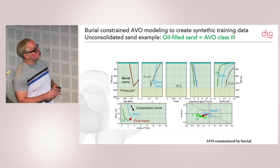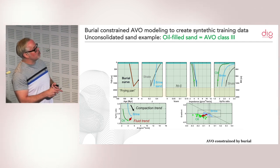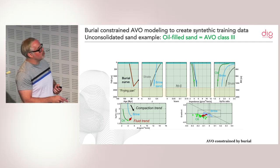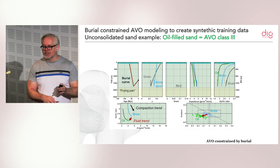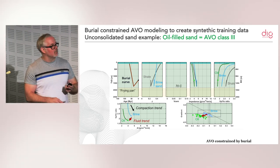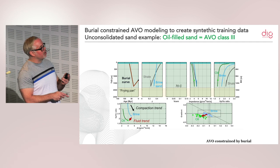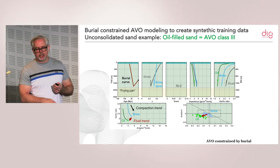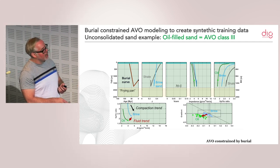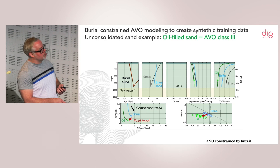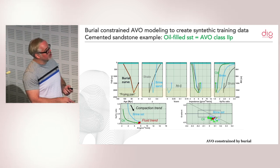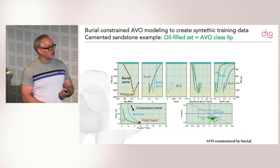Here's a very synthetic example. I made a simple burial curve with what we call a 'frying pan' — around 70 degrees, quartz-rich sands start to cement and become sandstones. In a case where the rock was uplifted before even reaching the frying pan, the rocks stay loose and the AVO response is a class 3. Here's the Monte Carlo simulation with uncertainties around those curves. If you put the rock deeper and cement it, the AVO response completely changes — to class 1 or 2P.